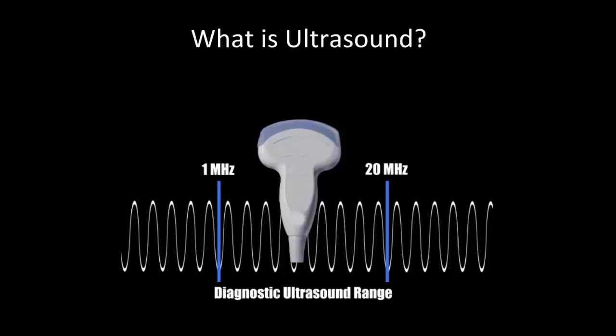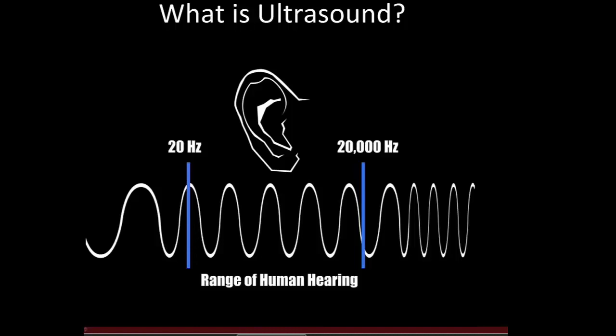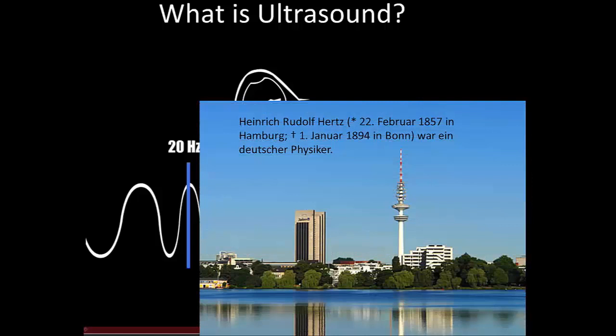Whoever decided to call frequency Hertz? The answer is pretty simple. As it is in chemistry, physics, and basically all sciences, the first discoverer or first describer gets the naming rights — and his name was Hertz. It was Heinrich Rudolf Hertz, who was actually born in the same hometown as yours truly, although quite a lot earlier.